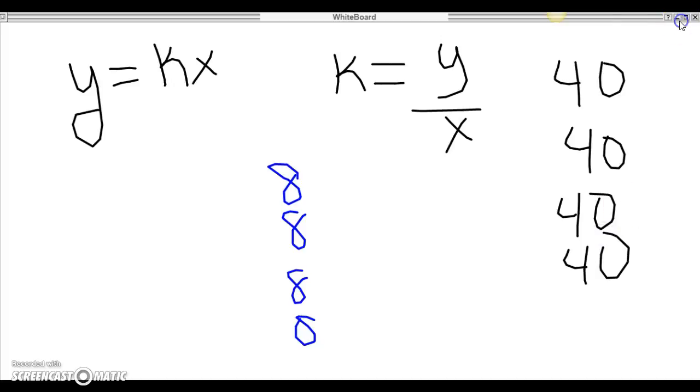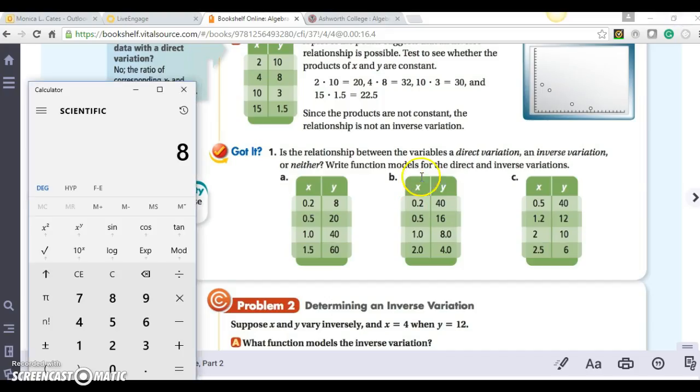So that means that for part b, it is an inverse variation. Let's see if we get a neither. Maybe c is a neither. We need to see an example of a neither. We did see an example of a neither up here. Let's see if this one is a neither as well. We have 0.5, 1.2, 2, and 2.5, so my x values are increasing. And I have 40, 12, 10, and 6, and my y values are decreasing.